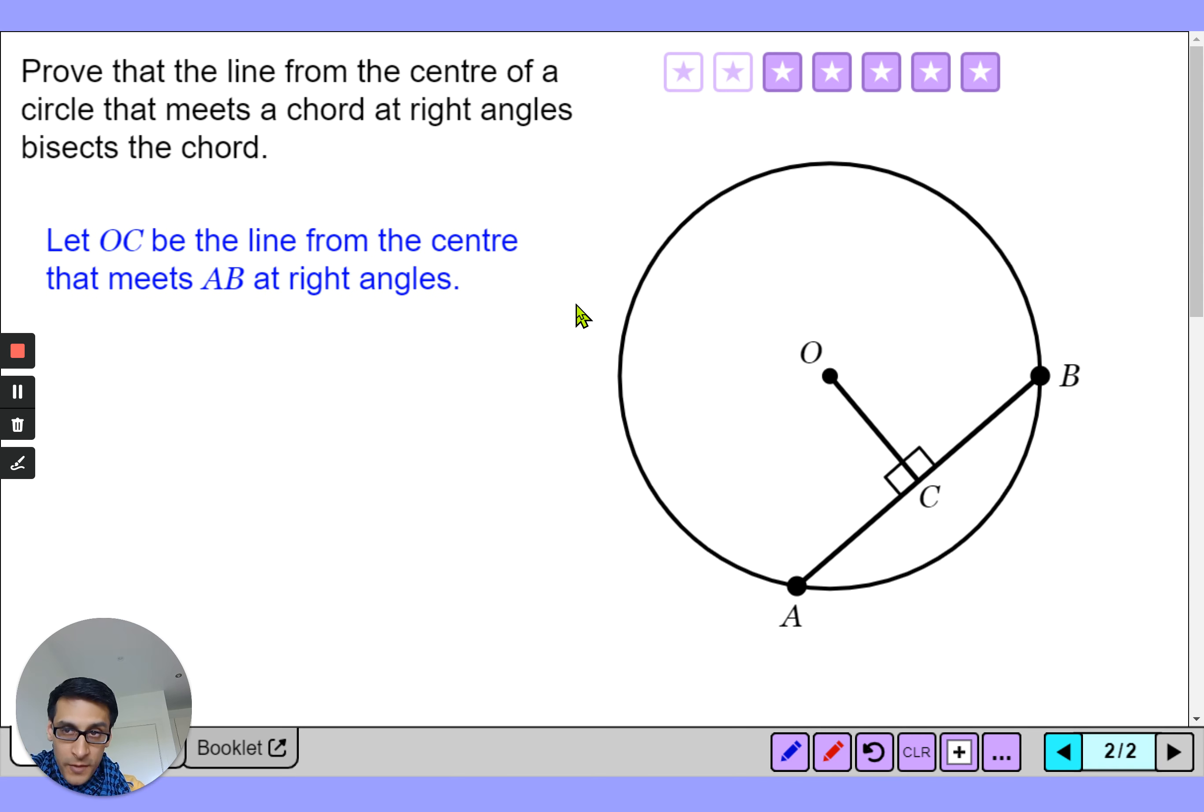Well first of all we can let OC be a line from the center that meets that right angle and then we can draw a line from O to A. So again the radii become your friends here, very useful. We know that these radii have to have the same length. So this length here, that length there matches. You would write that using this notation: OA is equal to OB because it's radii.